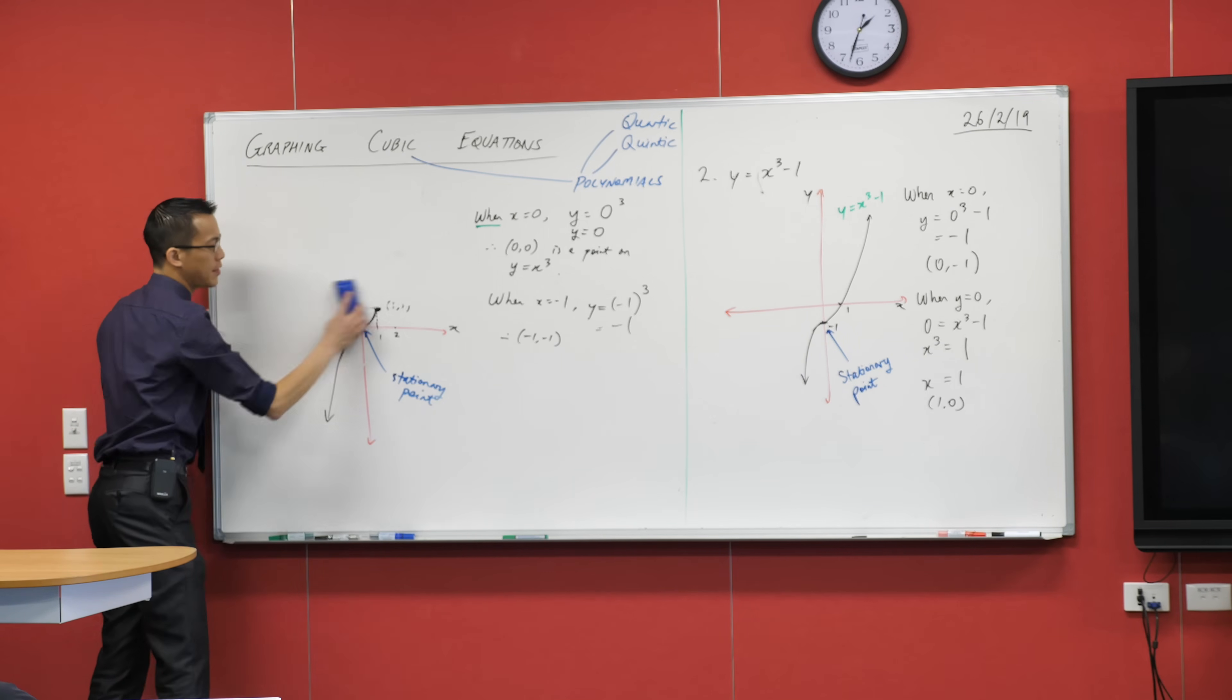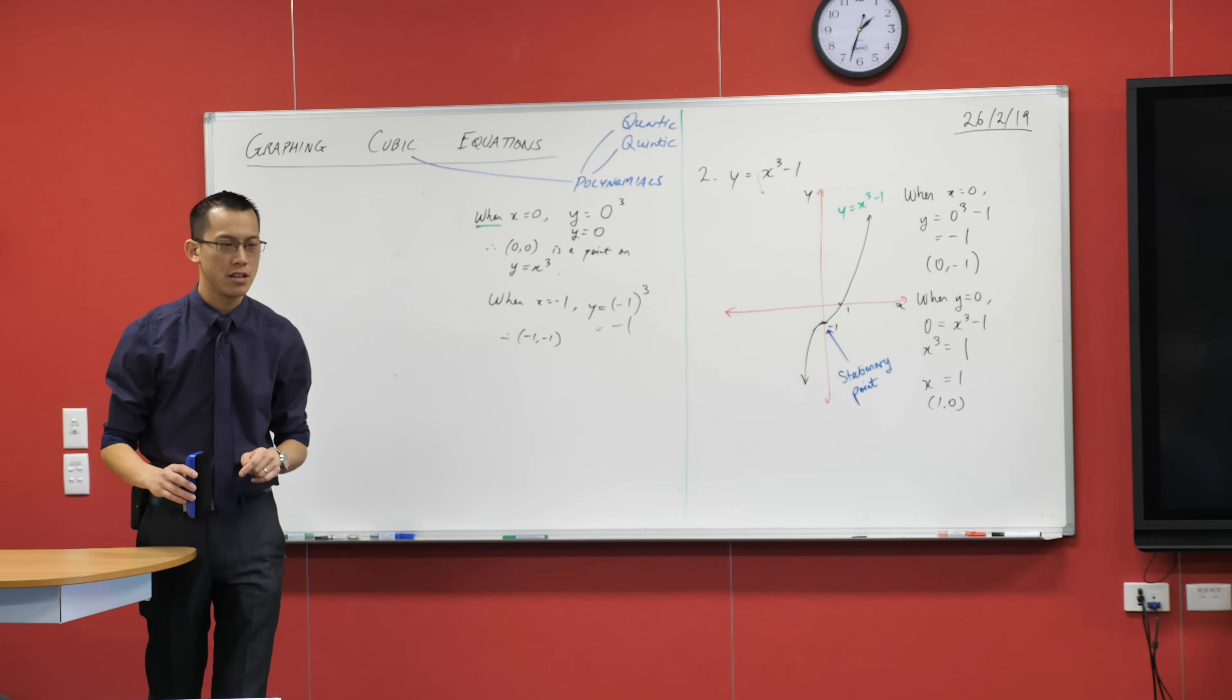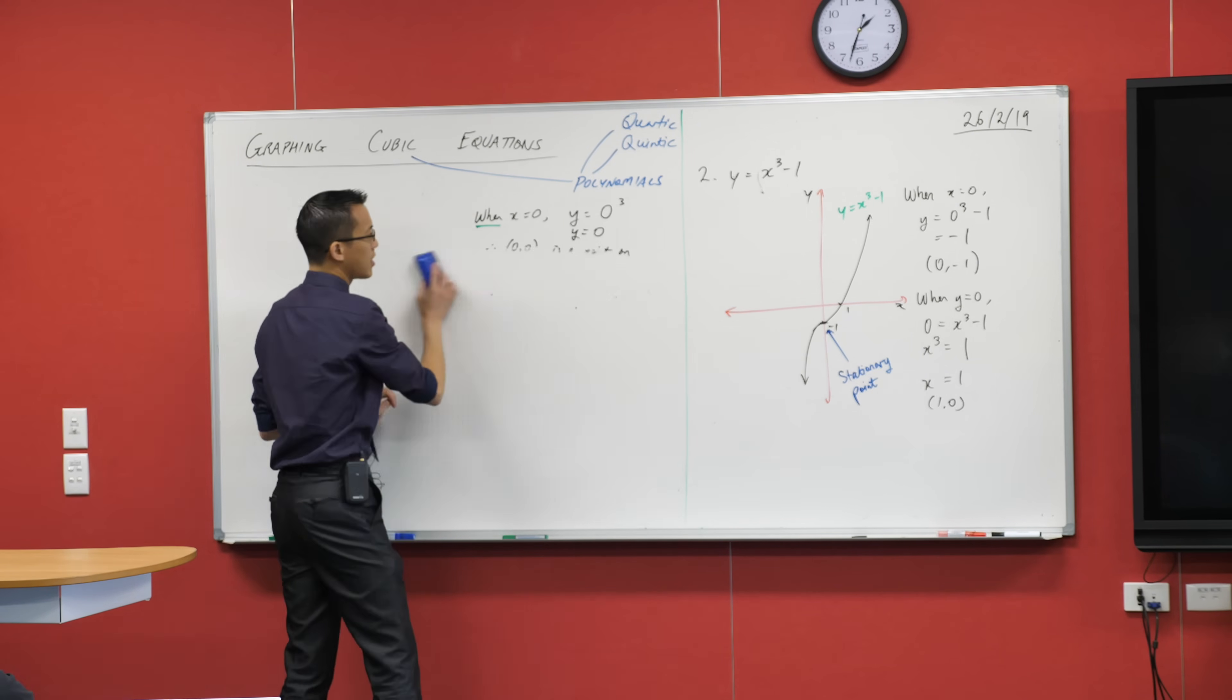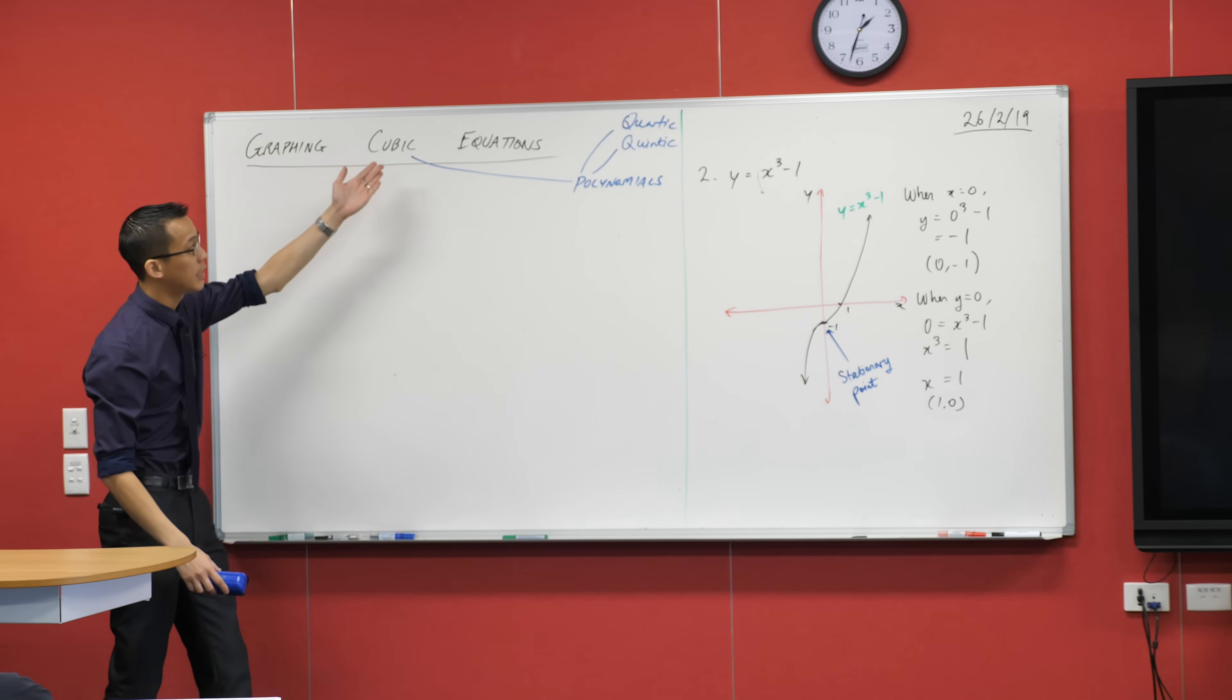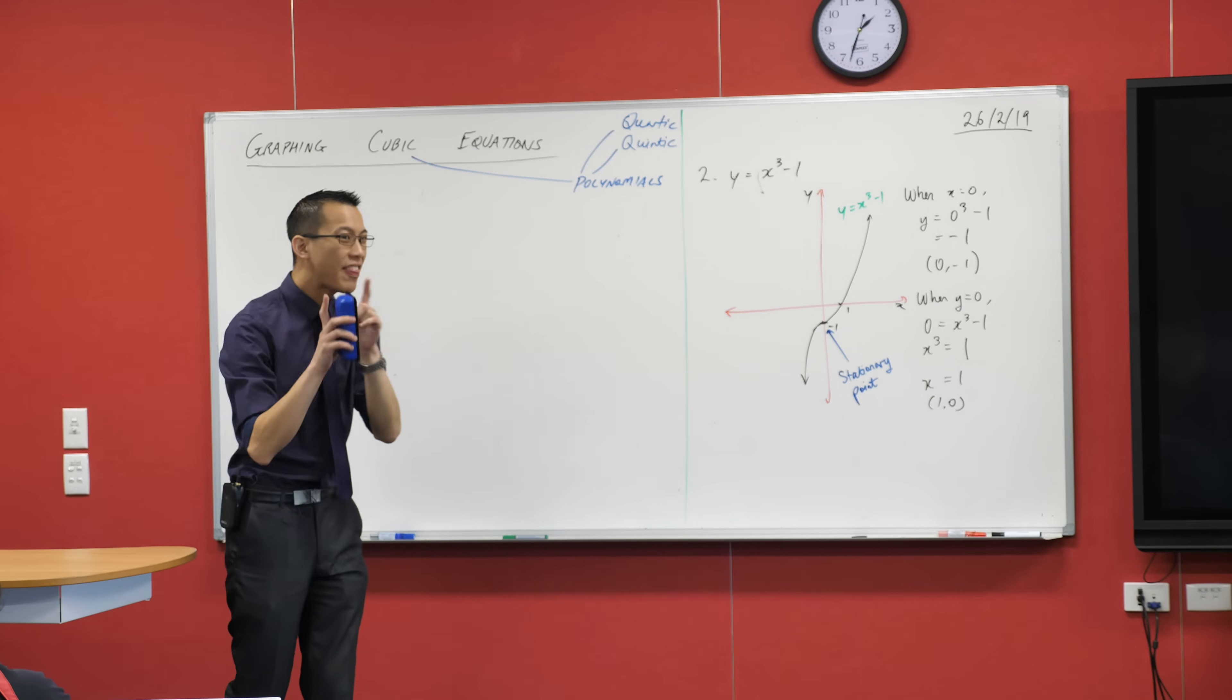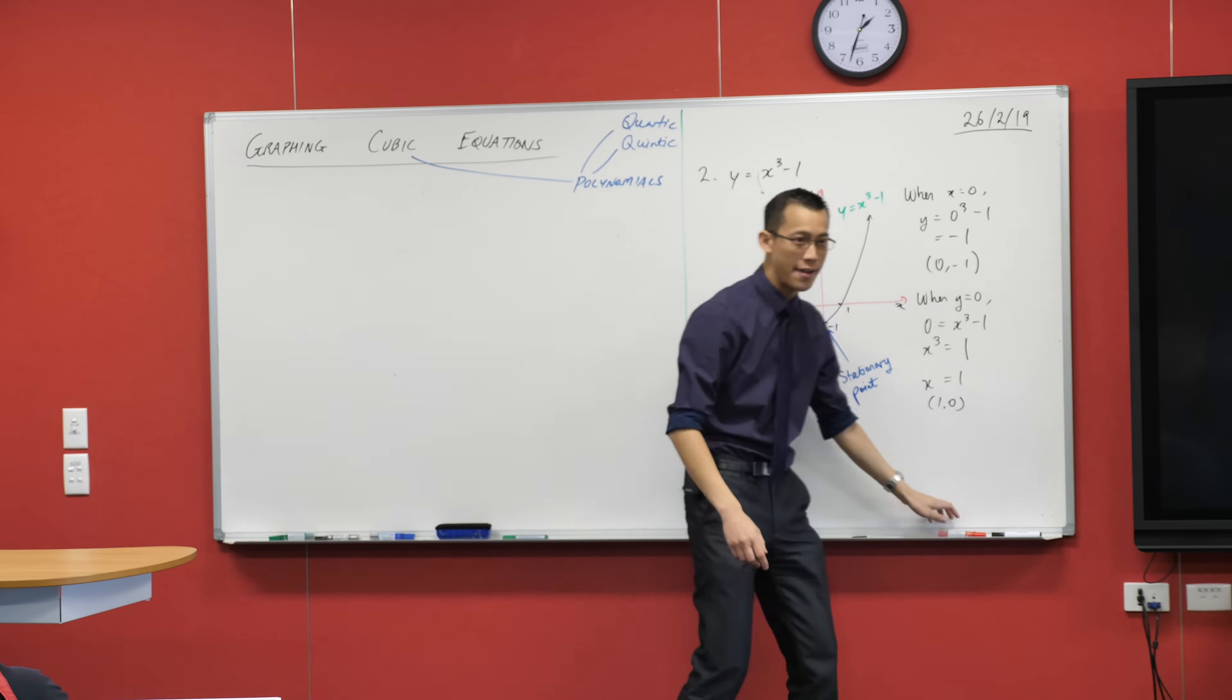One of the things you might notice about both of these graphs is they both have x-intercepts, right? You're like of course they have x-intercepts, why wouldn't they have x-intercepts? And I'm going to ask you that question. Why wouldn't they have x-intercepts? Because you know we were looking at these other shapes before, right? Before cubics we were looking at, not power 3, power 2. They're called parabolas, quadratics, right? And they don't always have x-intercepts. They don't always have them. Why not?